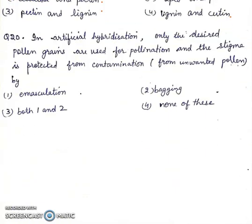Question 20. In artificial hybridization, only the desired pollen grains are used for pollination and the stigma is protected from contamination from unwanted pollen by: emasculation, bagging, both 1 and 2, or none of these. Right answer will be 3rd, both 1 and 2.